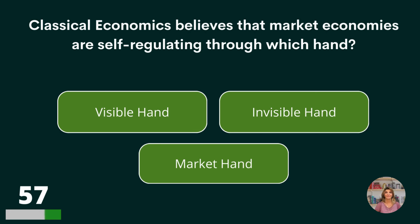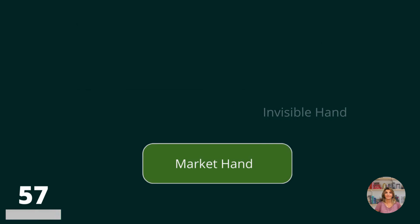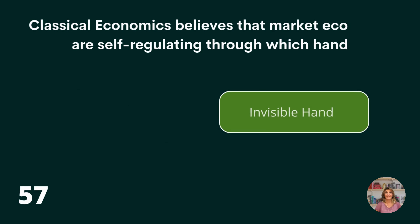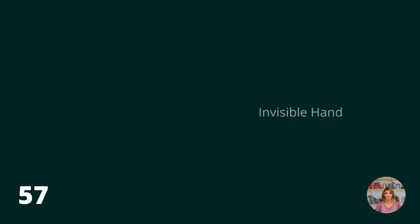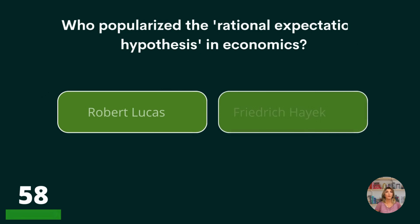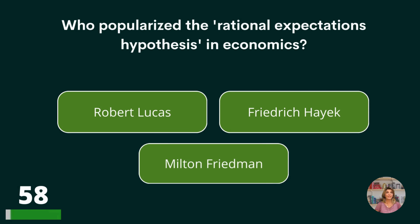Classical economics believes that market economies are self-regulating through which hand? Visible, invisible, or market? Invisible hand.